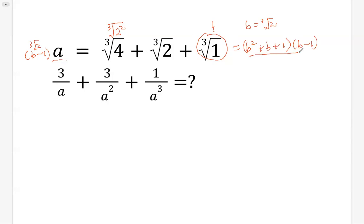Then remember the formula of difference of two cubes. So we get b cubed minus 1. While b is cubic root of 2, so cube and cubic root cancel each other. So we get 2 minus 1, so we get 1.